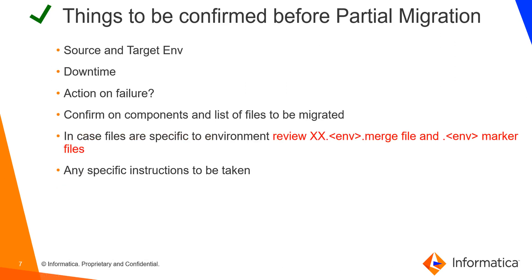Coming to things to be confirmed before partial migration — it is more or less similar to complete migration, where you have to specify source and target environment. Downtime and action on failure should also be known. Confirm the components and the list of files that need to be migrated — for example, if you only want to migrate the plugin INI file or referend properties, just mention the file names. Only those specific files will participate in the migration, not all files. In case these files are environment-specific, the properties files on the target environment should have a marker. Please verify the marker and the corresponding properties within those files, and provide any special instructions for the partial migration.